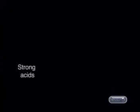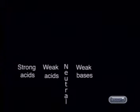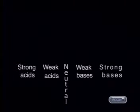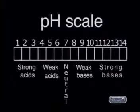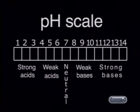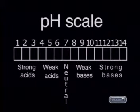At one end of the scale we have strong acids, then weak acids, neutral substances, then weak bases, and finally strong bases. In our previous lesson, we introduced a scale to measure this range of acidity. This scale is known as the pH scale. We used a special indicator, sensitive to even small changes in acidity, called a universal indicator, to establish this pH scale.